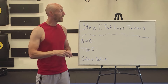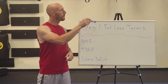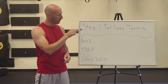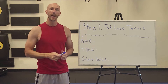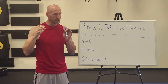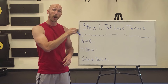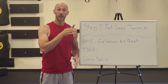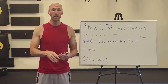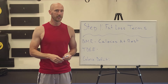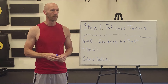Step one is defining some very simple but very important fat loss terms. We're going to go over BMR, TDEE, and calorie deficit. BMR is calories at rest — so if you were to just sit around doing absolutely nothing, you would still burn calories just existing. That is your BMR, your basal metabolic rate.